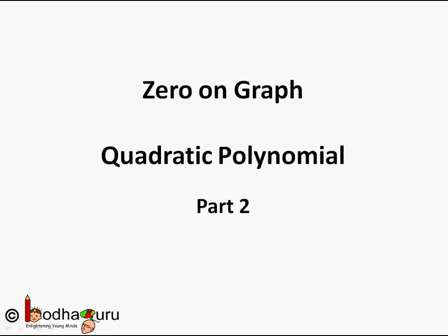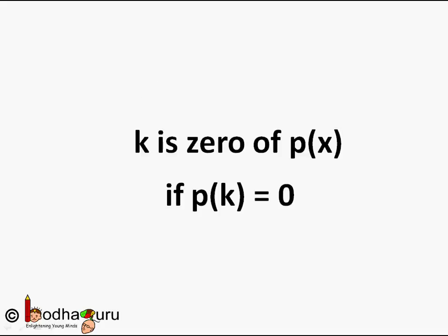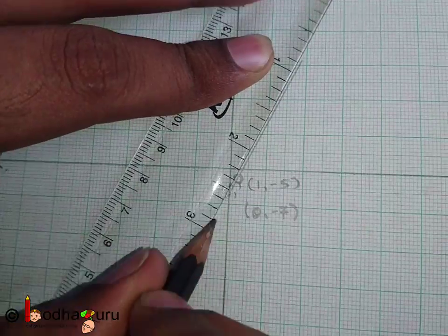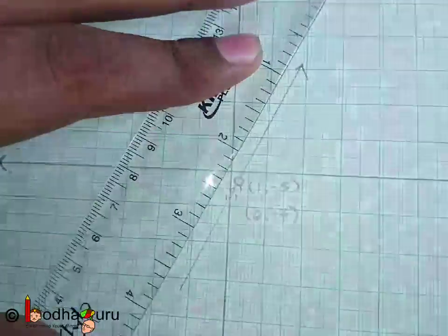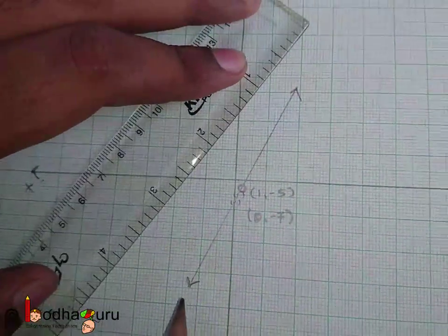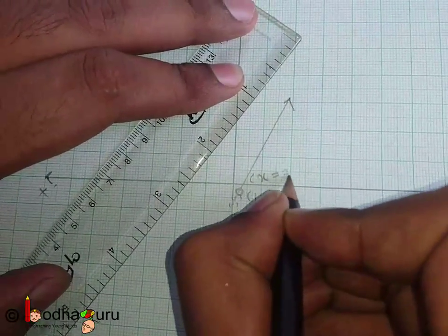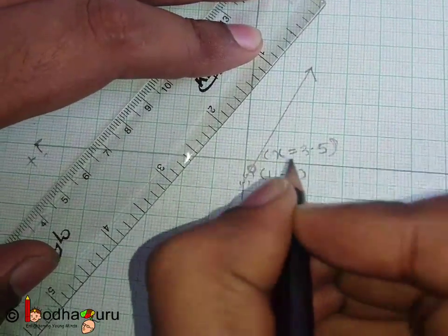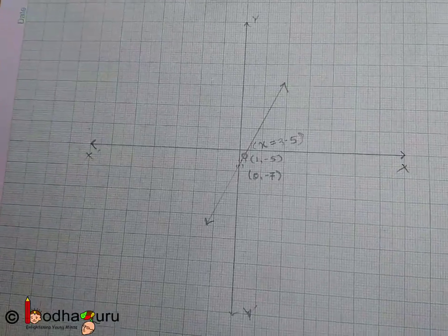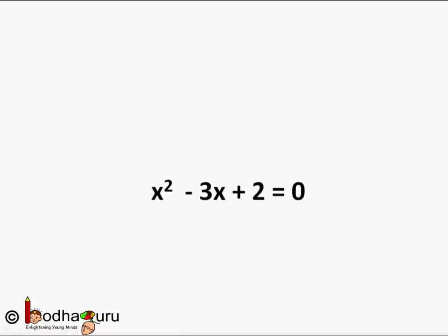Hello friends, as we have seen in our earlier videos, a real number k is zero of a polynomial p(x) if the value of the polynomial is 0 for x equal to k. We also learned in our previous video how to plot a graph from a linear polynomial and how to find the zero of the polynomial from that graph. In this video we will learn how to do the same for a quadratic polynomial.